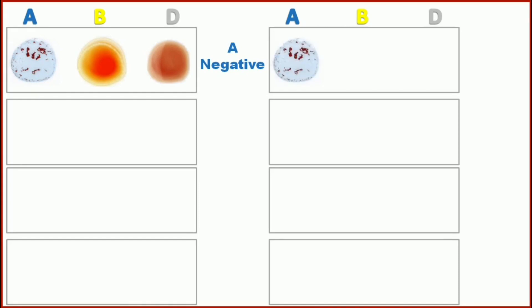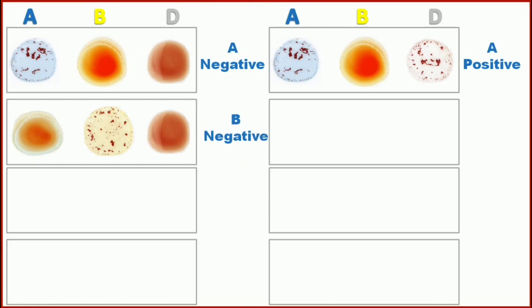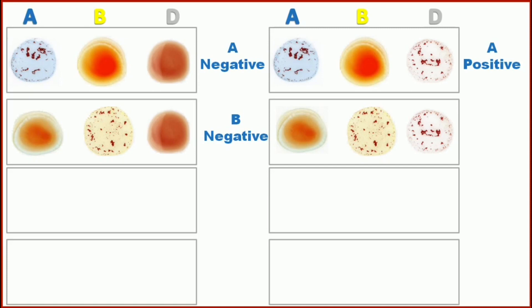Next, if there is agglutination in A marking and agglutination in D marking but no agglutination in B marking, the blood group is A positive — because antigen A is present and RH antigen is present. Then if there is no agglutination in A marking but there is agglutination in B marking and agglutination in D marking as well, the blood group is B positive.